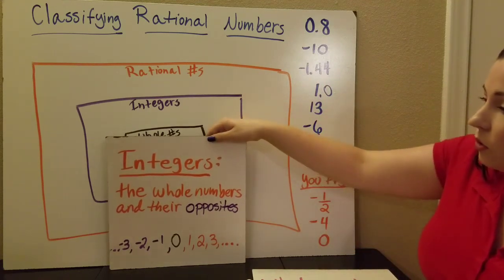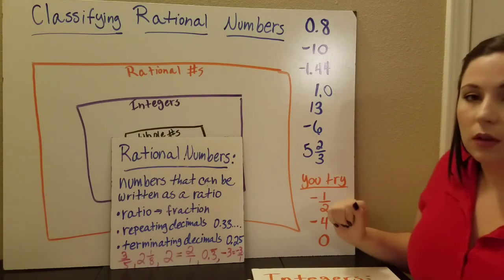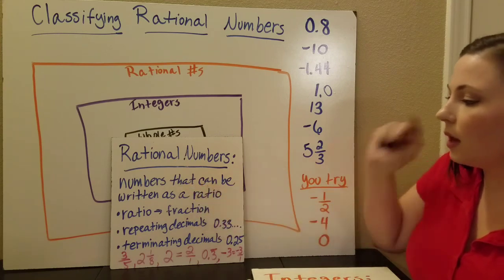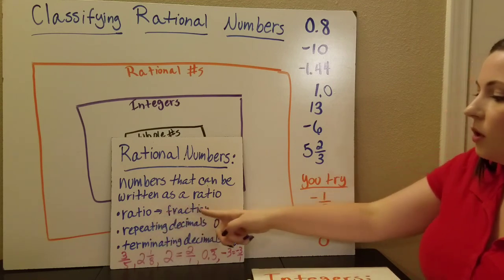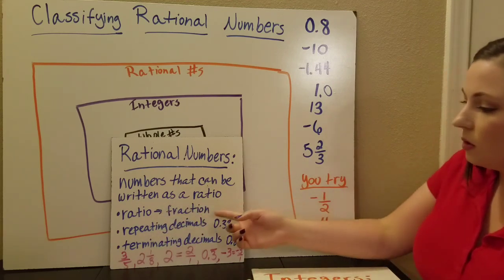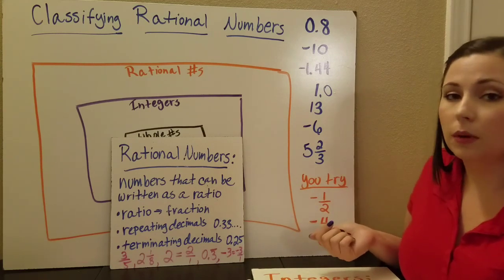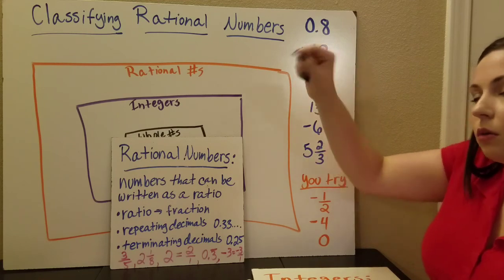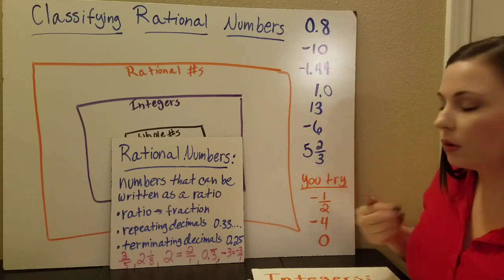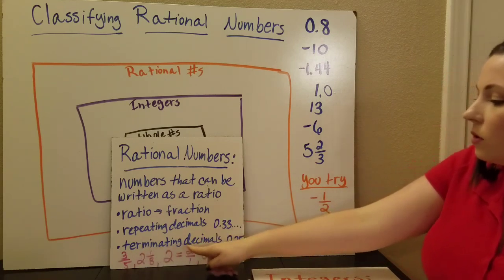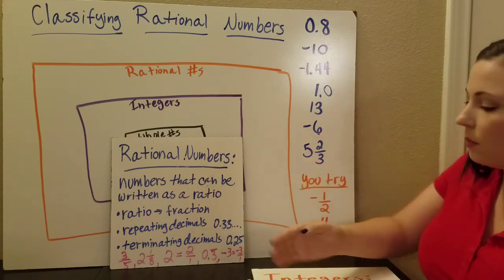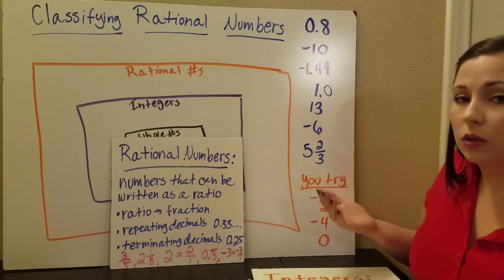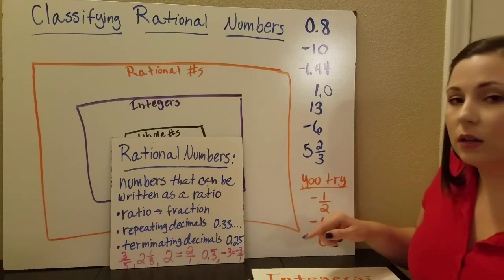The next largest group we'll be talking about is the rational numbers. Again, write down these definitions. Rational numbers are numbers that can be written as a ratio — and a ratio is another way of writing a fraction. So if you can write the number as a fraction, it can be a rational number. Rational numbers also include repeating decimals, like 0.33333 on and on, and terminating decimals — decimals that just stop, like 0.25. You can take a repeating or terminating decimal and write it as a fraction.